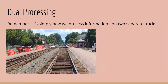Now, dual processing — we've already talked about this too. This is how we process information on two separate tracks. It might sound confusing, but basically there are two different ways our brain processes things. 'Dual' means two, so you don't need to know the specifics, just that that's how it works.